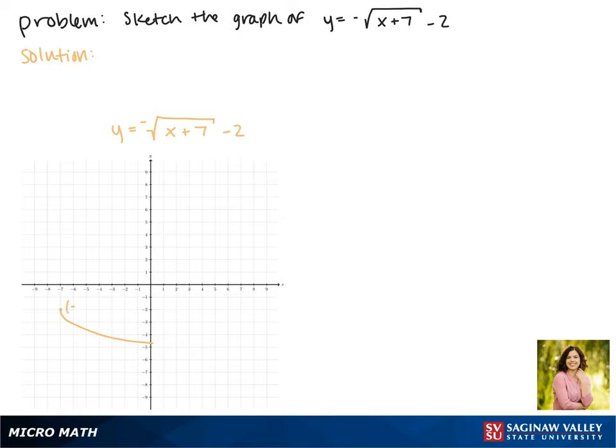So that now it's passing through the point negative 7, negative 2. And this is the graph of our function.